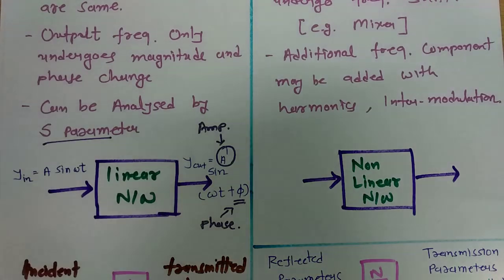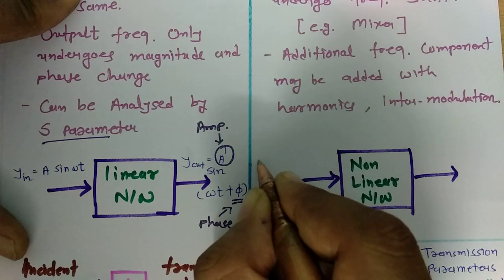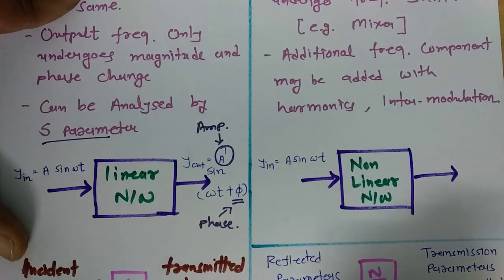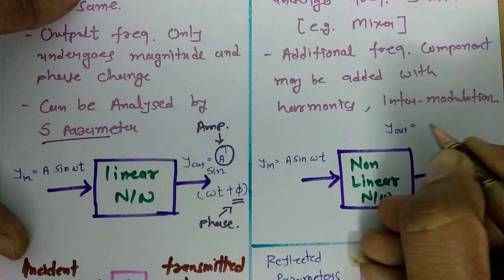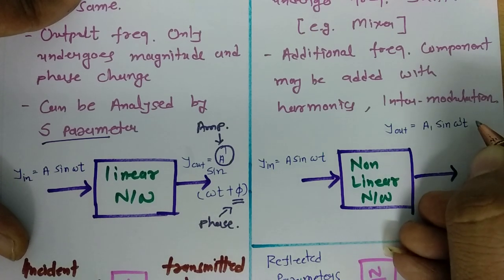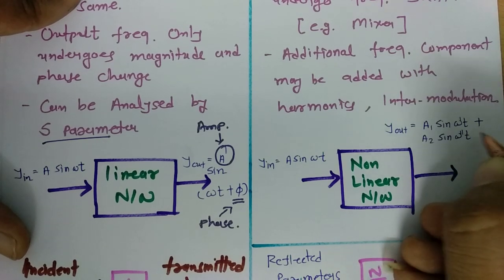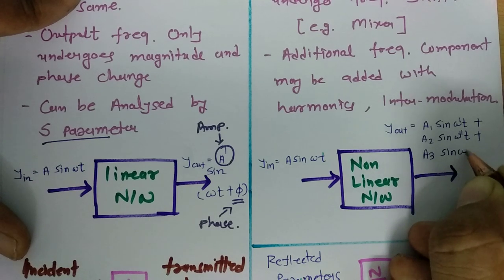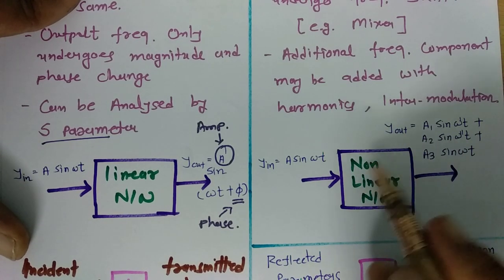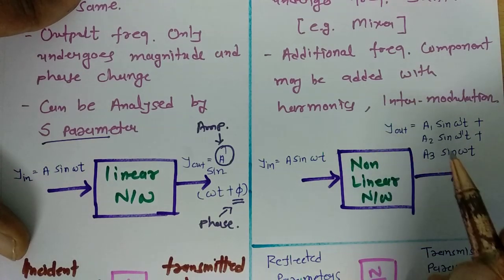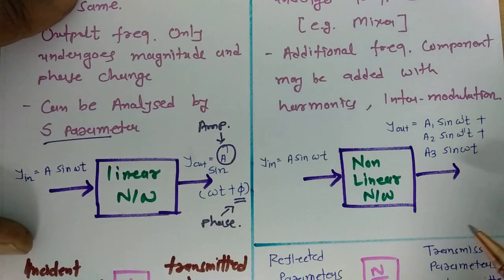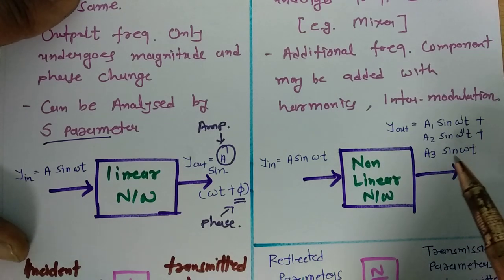When we talk about a non-linear network, if I give the same input V_in = A sin(ωt), the output has many different frequencies: it could be A1 sin(ω't) + A2 sin(ω''t) + A3 sin(ωt). One can clearly see there are different frequencies added because of the non-linear network — additional frequency components due to harmonics and intermodulation. To analyze a non-linear network, we usually use a spectrum analyzer.